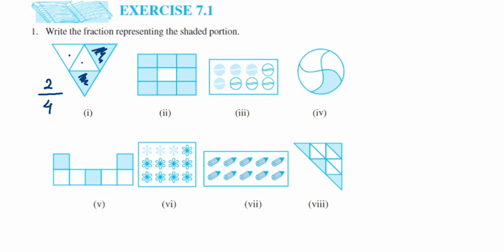For the second figure, count how many parts there are: one, two, three, four, five, six, seven, eight, nine — so the denominator is nine. Now count how many parts are shaded — except one unshaded part, all others are shaded: one, two, three, four, five, six, seven, eight. So the fraction is eight upon nine.